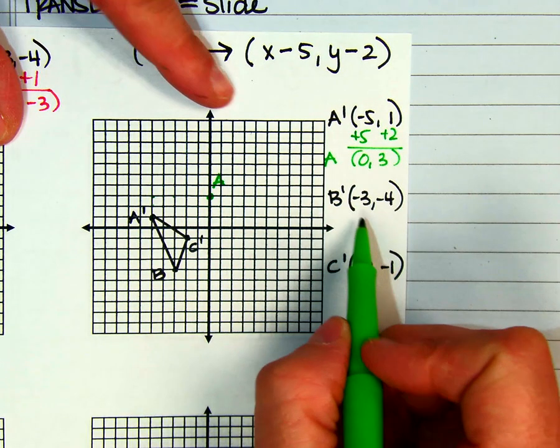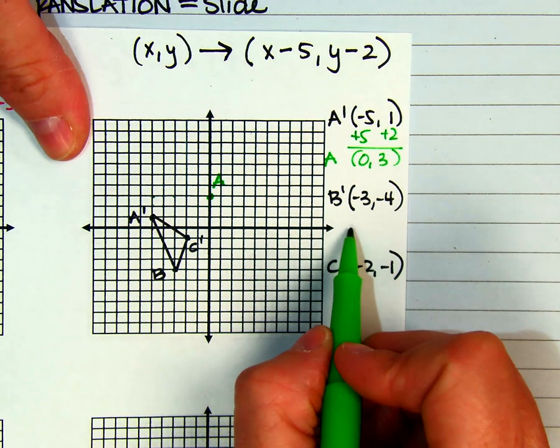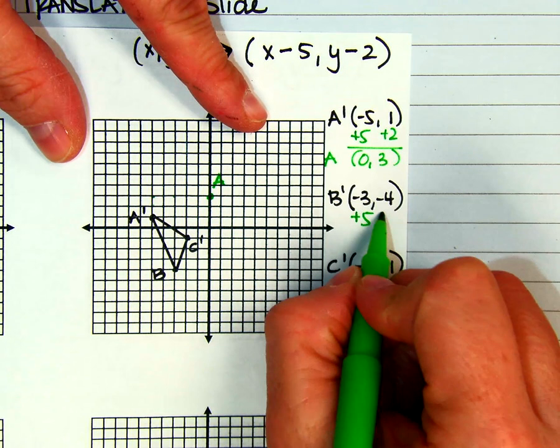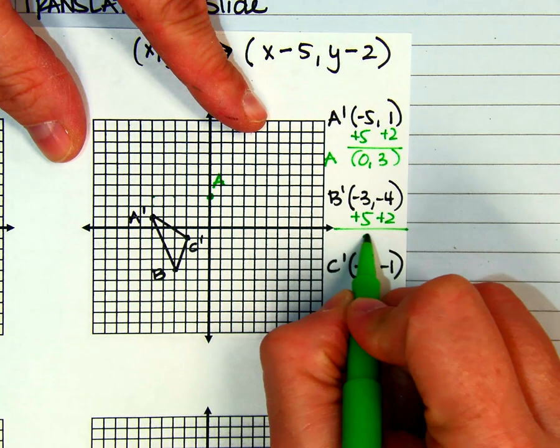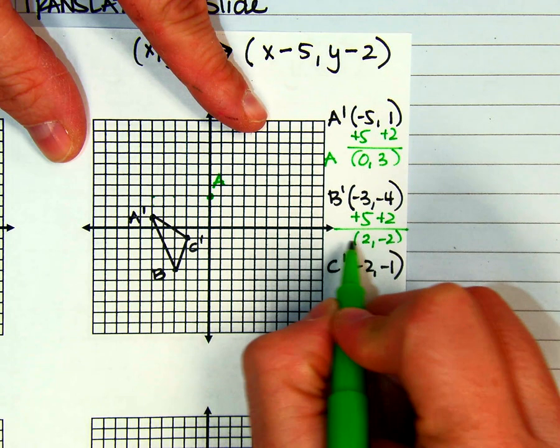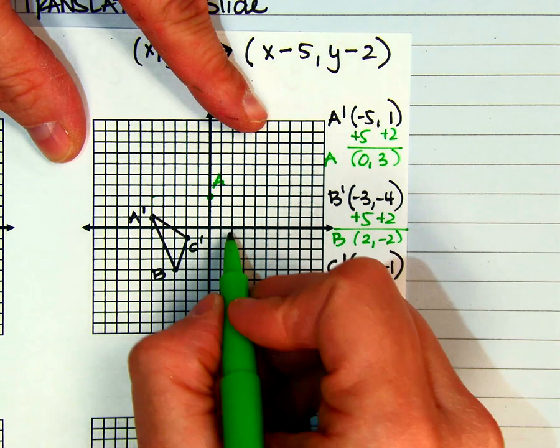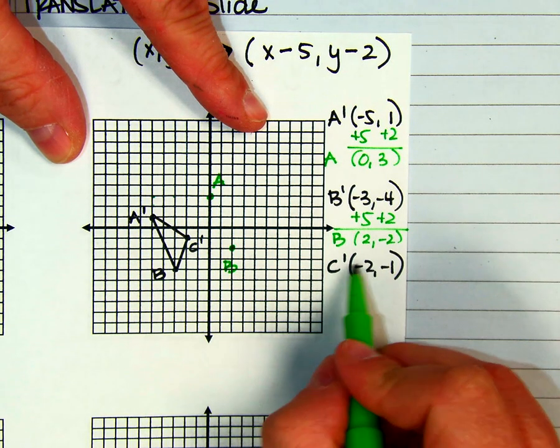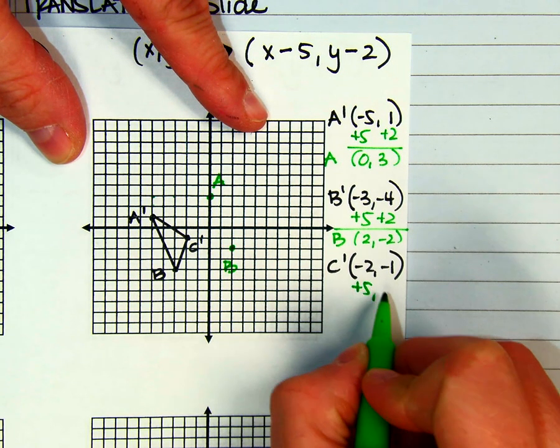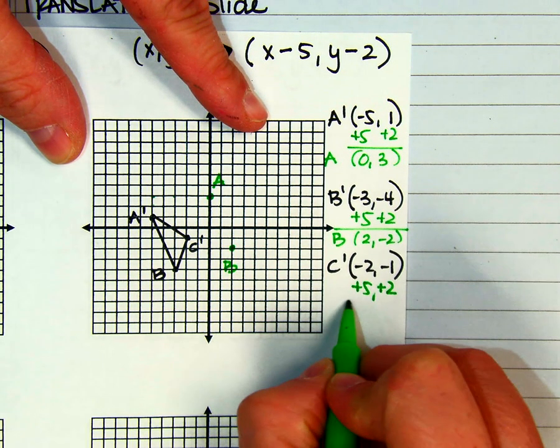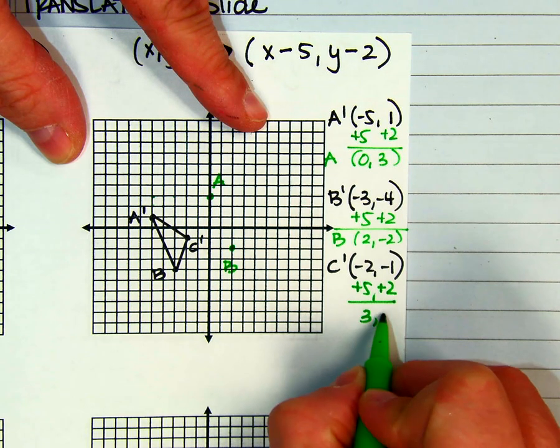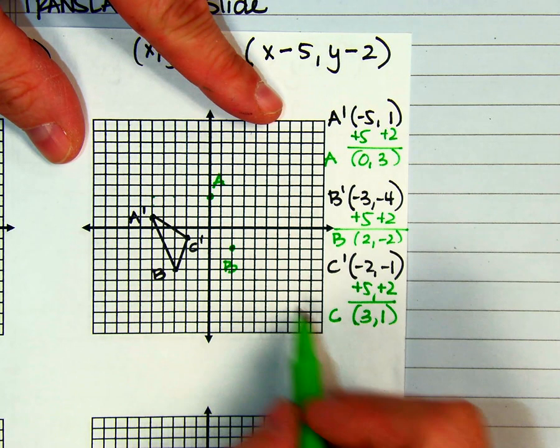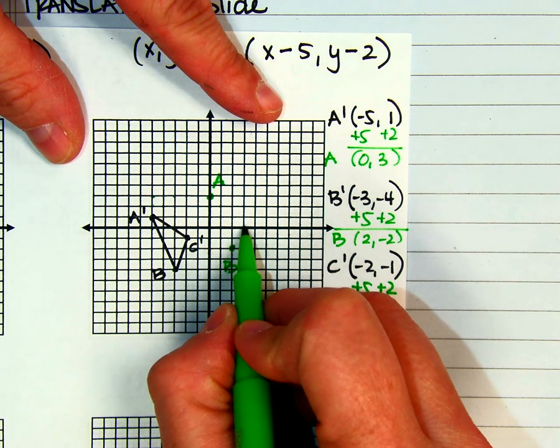So I'm going to go backwards again because I'm going from my primes to my pre-image. So I'm again going to add 5, and I'm going to add 2. So that means B is at the order pair of (2,-2). Do the same thing with my C. I'm going to add 5, and I'm going to add 2. Gives me the order pair of (3,1). So B, I already did. C is at (3,1).